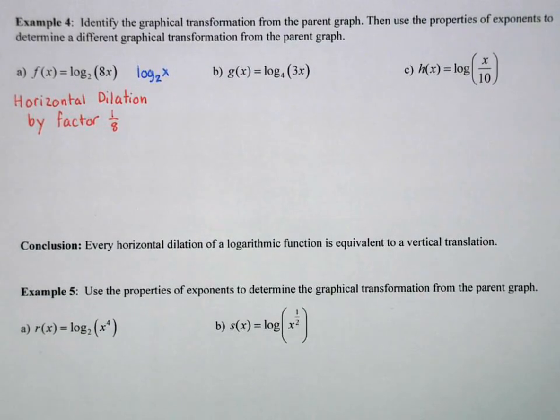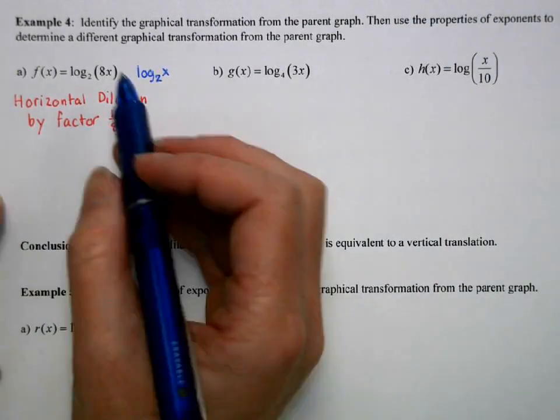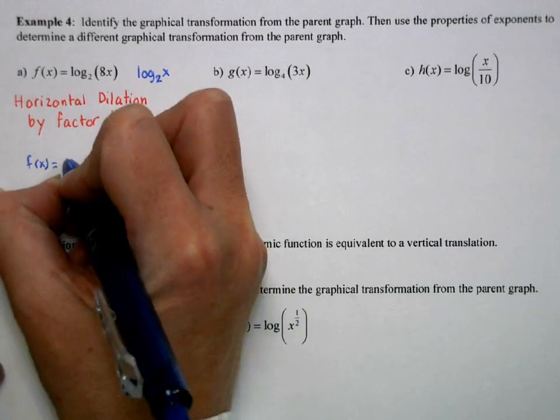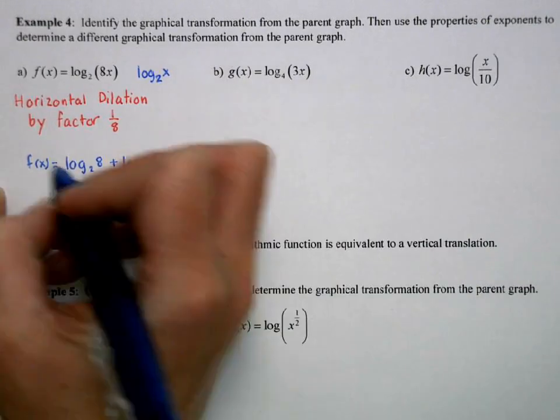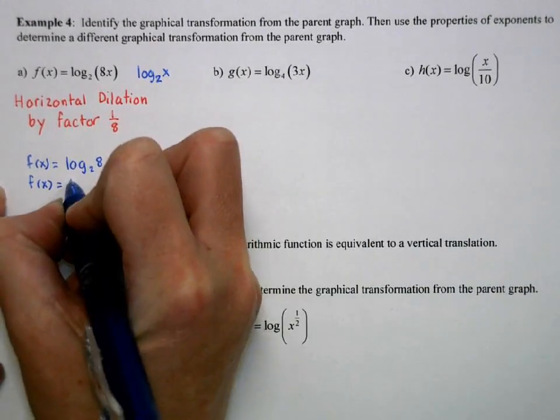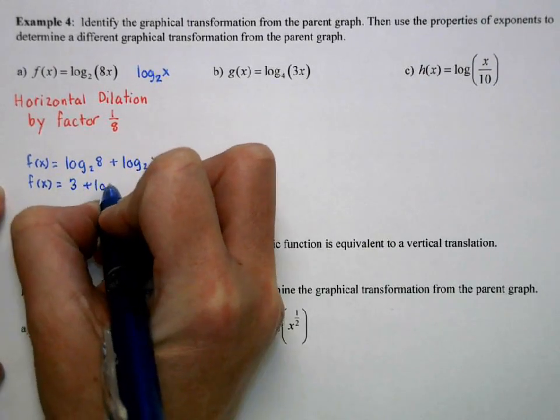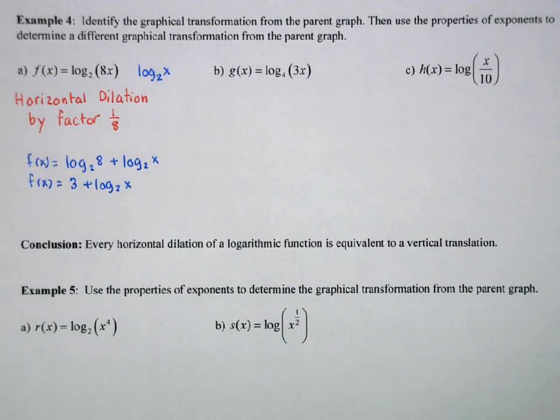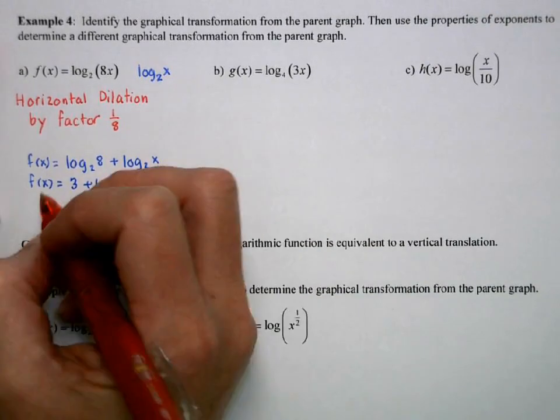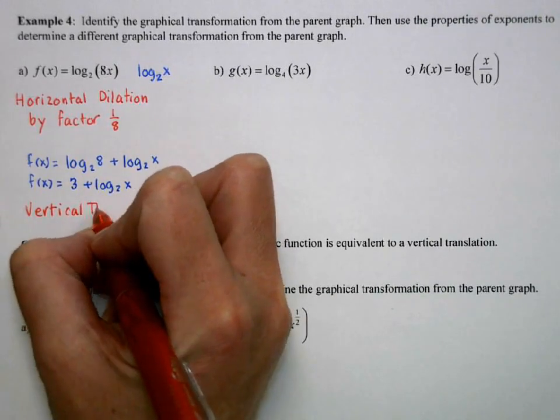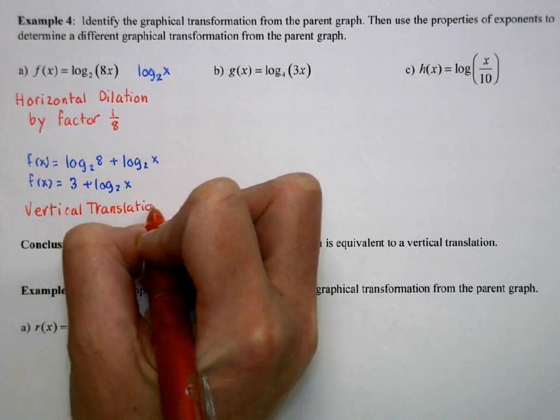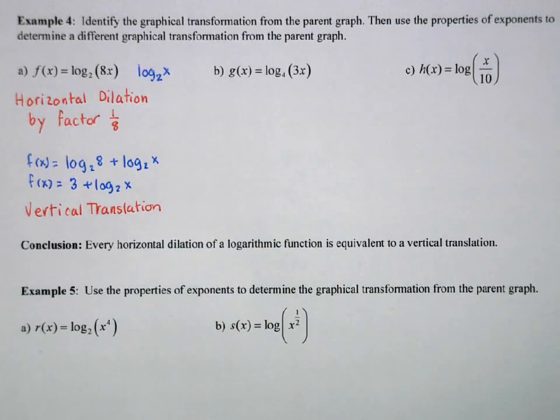That graph is going to get compressed horizontally. If I use my properties of logs I can rewrite this as log 2 of 8 plus log 2 x which I can further simplify to 3 plus log 2 x. So this also has a graphical transformation but written this way when I take my parent function and add 3 to that, that's a vertical translation. It's going to move the graph up 3. It's still going to be the same graph but we can describe the transformations as either a horizontal dilation by a factor of 1 eighth or a vertical translation.